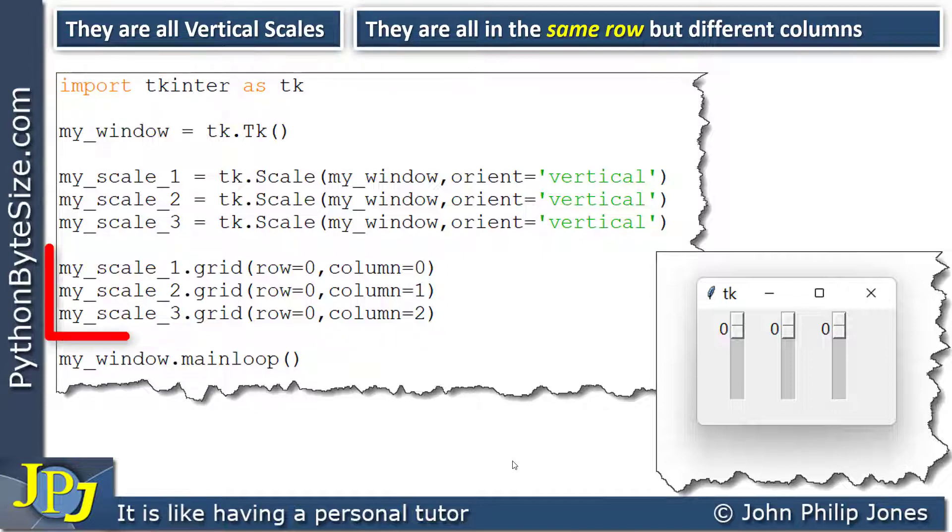I will now consider these three program statements and you can see that each program statement is dealing with a different scale and in all cases we are going to be invoking the grid method and within the grid method calls you can see that I'm setting the rows and columns as shown here.